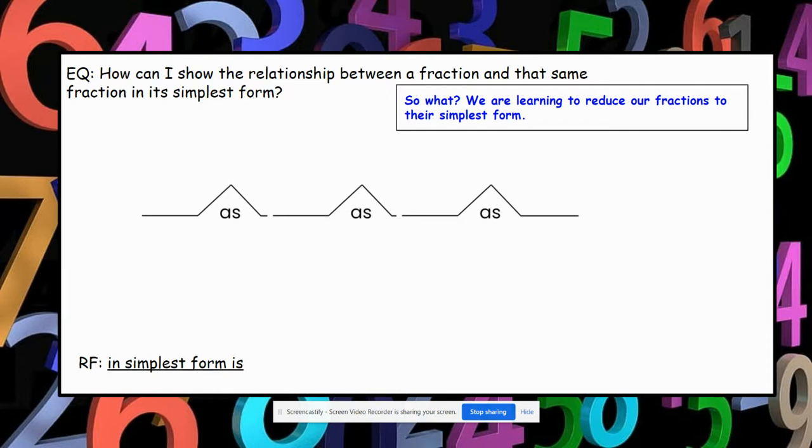So I'm going to read: Two-fourths in simplest form is one-half, as four-twelfths in simplest form is one-third, as...